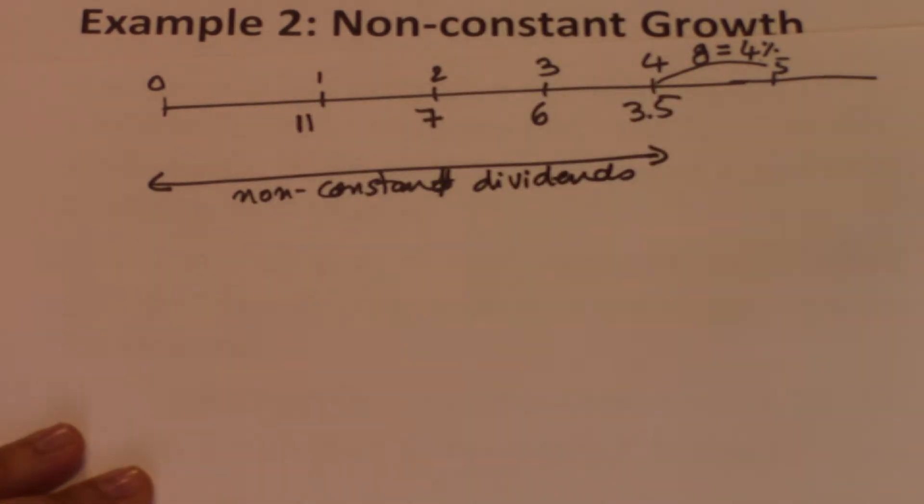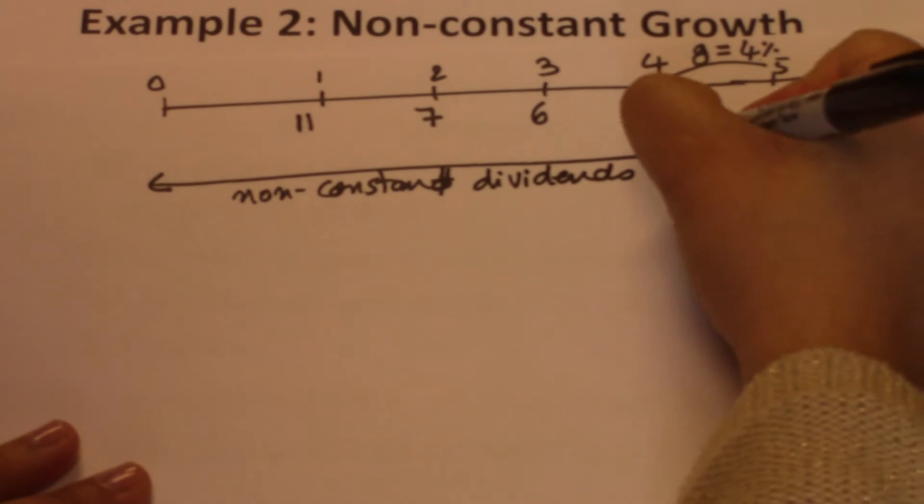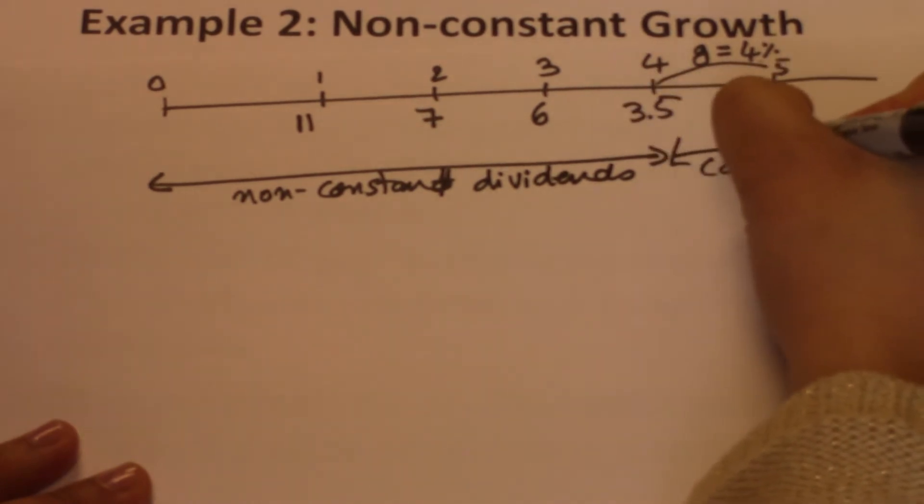From year 4 to forever, we have constant dividends, or constant dividend growth.